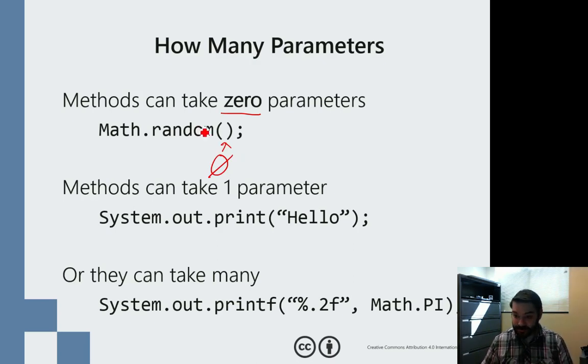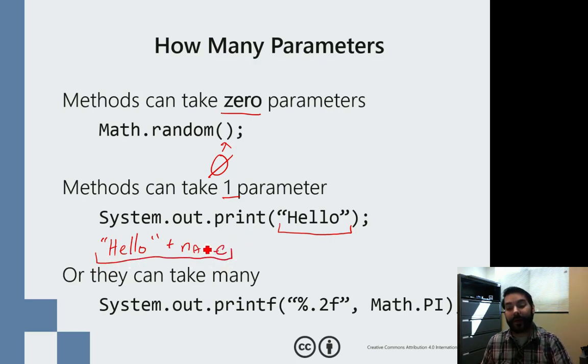Or we can say a method takes one parameter. Let's think about System.out.print or println or printf. Println or print take one parameter. Even though we do string concatenation and add pluses in there, something like hello plus name collectively is still just one parameter.